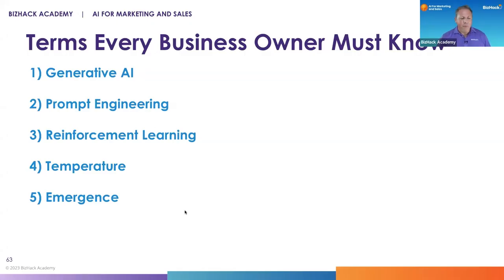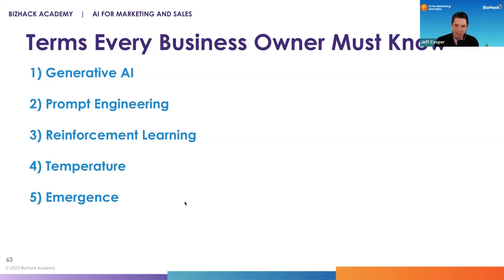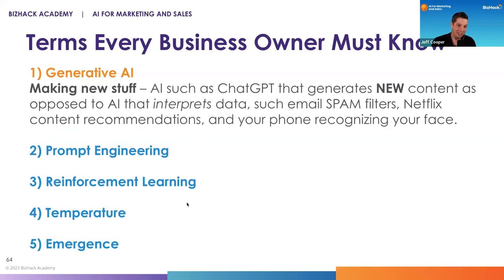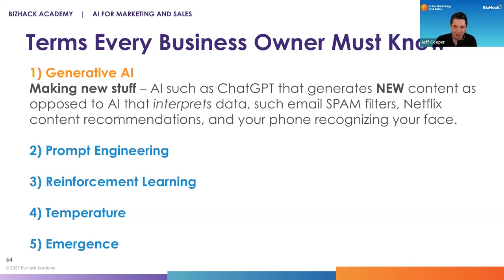These are the terms that every business owner must know. We'll start with generative AI. Generative AI is a very specific type of artificial intelligence that helps you make new stuff. We've had AI for a long time — like email spam filters or even your phone which will recognize your face when you unlock it. Generative AI is a new class of tools like DALL-E or ChatGPT that produces new content, as opposed to just understanding content.